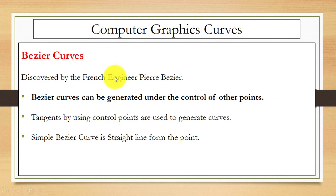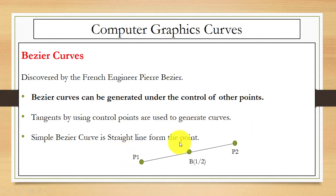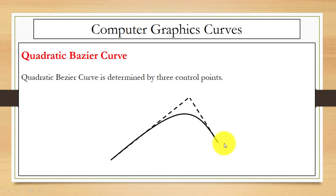Next is the Bézier curve, discovered by a French engineer. This curve can be generated under the control of other points, using tangents for generation. We have different types of Bézier curves. The simple Bézier curve is a straight line from the points — you can see here it is nothing but just a straight line.